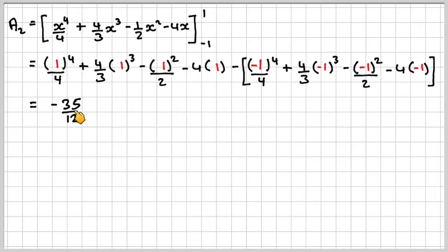So this one here gives you minus 35 over 12. This one we've already worked out in the previous part to be minus 29 over 12. If we add them together, we get a negative area, which we expected because A2 was below the axis.